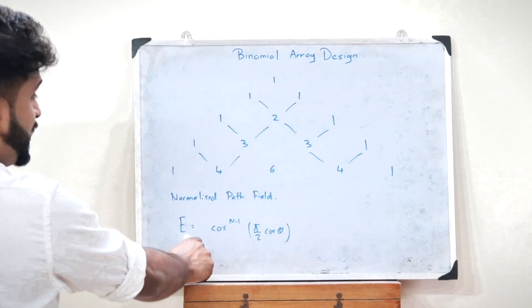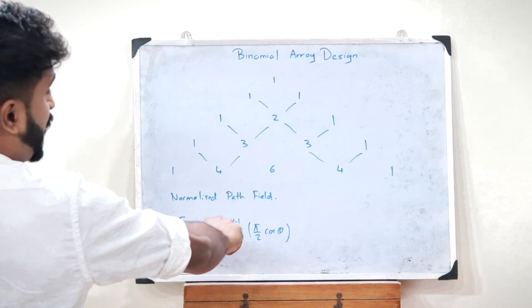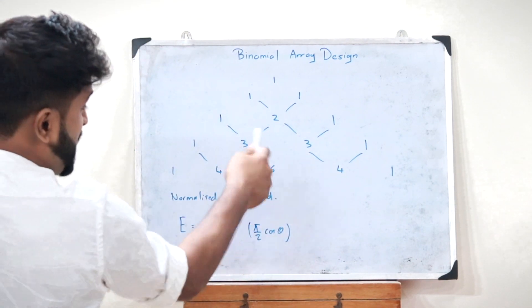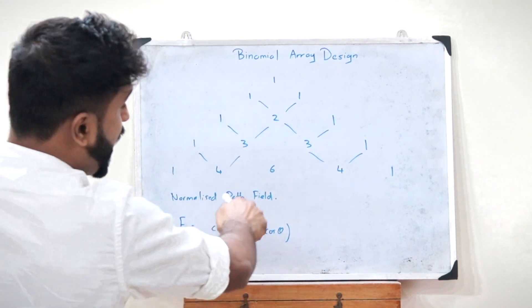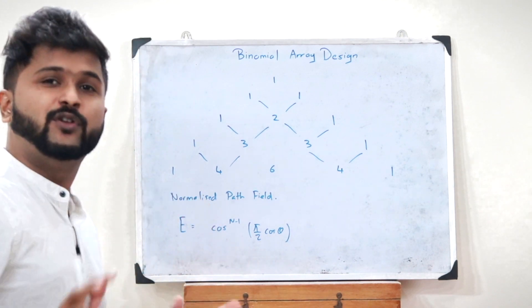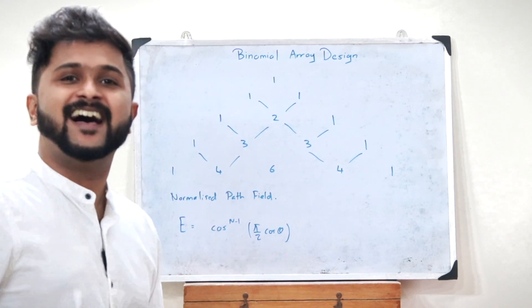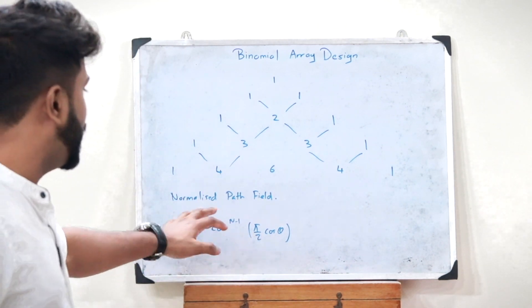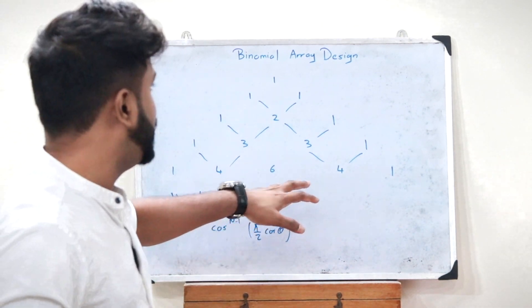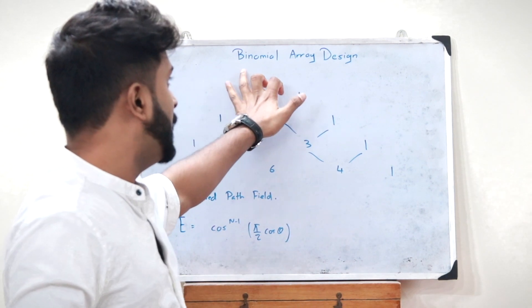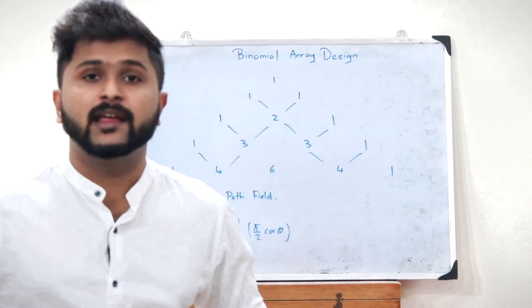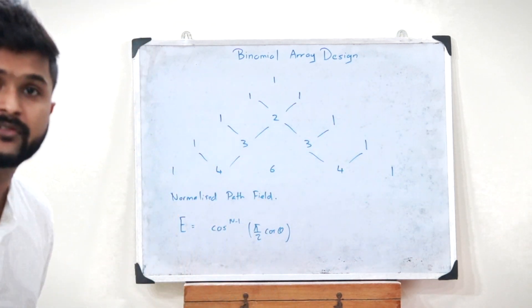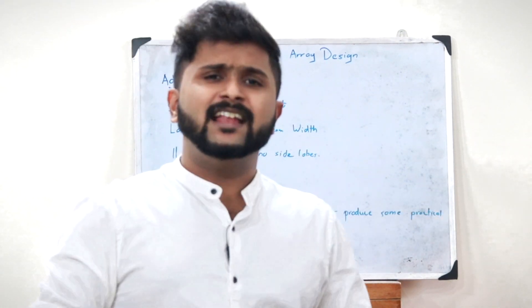The normalized path field of a binomial array of antennas is given by: E = cos^(N−1)(π/2 · cosθ). That is the normalized field equation for a binomial array.